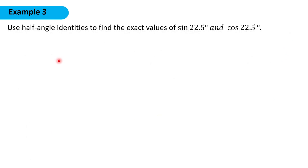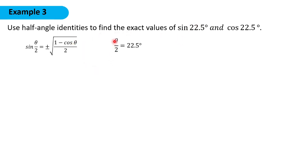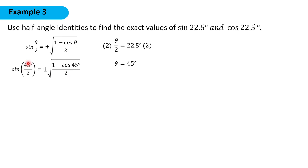For example 3, we are asked to use half-angle identities to get the sine and cosine of 22.5 degrees. This formula uses sine of θ/2, so θ/2 equals 22.5 degrees and we need to find θ. Multiplying both sides by 2, we get θ equal to 45 degrees, since 22.5 times 2 is 45. So in our formula, that would be 45 degrees over 2, which equals 22.5 degrees.